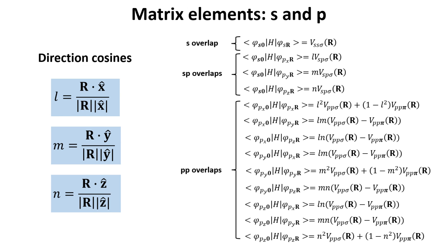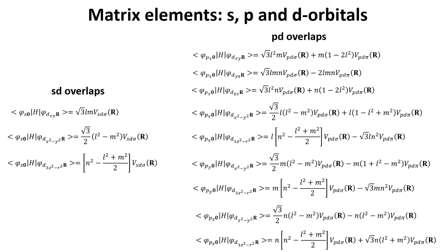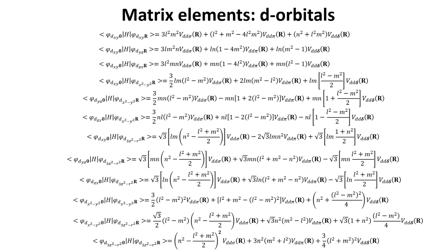Here we list the Slater-Koster parameters related to s and p orbitals, with the direction cosines defined in the blue boxes. Adding more orbital types brings many more distinct matrix element shapes — for instance, one could also have bonds between s and d orbitals. The full table involving all orbitals of interest can also be found. Once one knows the crystal structure, the matrix elements table, and the numerical value of the Slater-Koster parameters, one can fully calculate the band structure of a given material. It is therefore common practice to compute and publish the Slater-Koster parameters for a particular crystal. We also list the parameters related to s-d, p-d, and d-d orbitals for your convenience.